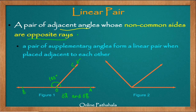Opposite rays means 180 degrees — the angle formed is 180 degrees. From that, we can conclude that a pair of supplementary angles forms a linear pair when placed adjacent to each other. Because supplementary angles always add up to 180 degrees, which means we will get two rays that are opposite to each other, since this 180-degree angle must be formed.